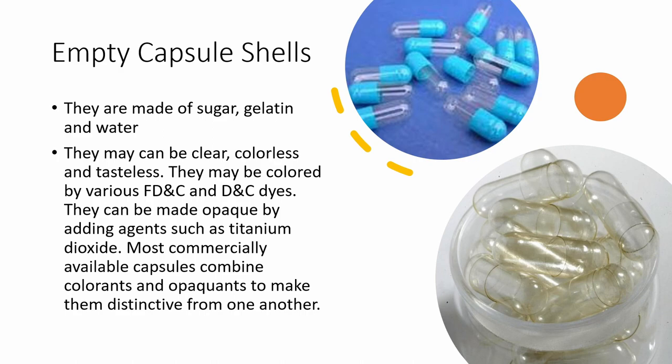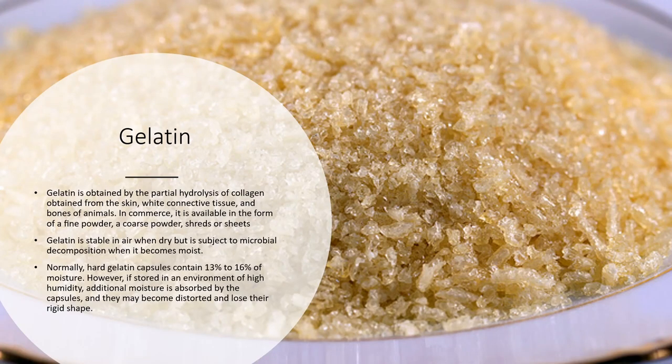Companies like it when their dosage forms are unique to the company. For example, if you imagine an orange and white capsule, you are going to think of Amoxan. Primarily, capsules are made out of gelatin, and gelatin is obtained by the partial hydrolysis of collagen obtained from the skin, white connective tissue, and bones of animals.